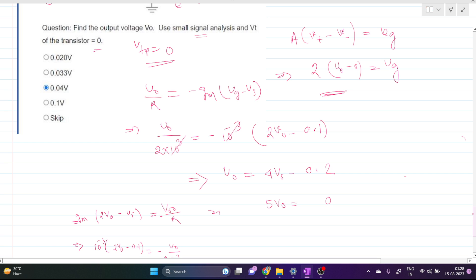Oh, this negative is present here, so there will be a negative and there will be a positive. So our 5 V_out equals 0.2, and our V_out is 0.2 divided by 5, and this is nothing but 0.04 volts.